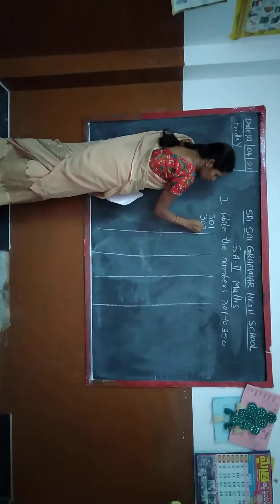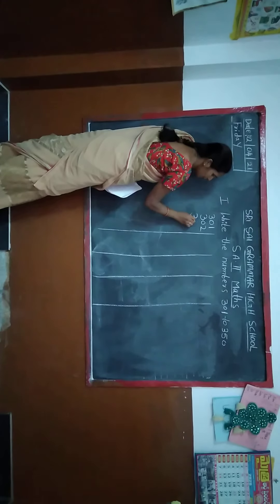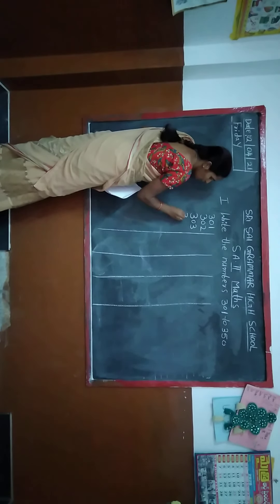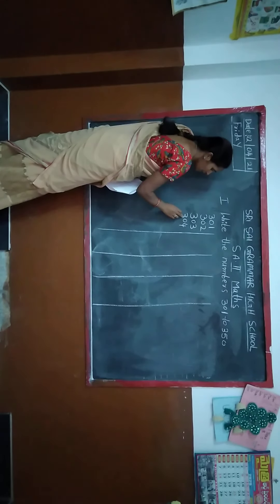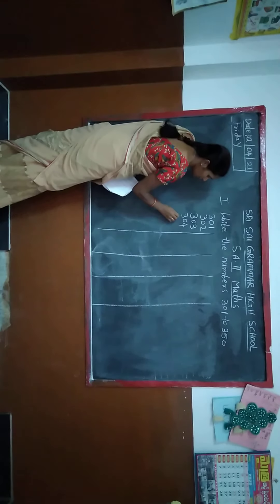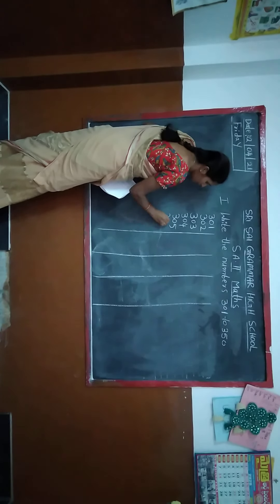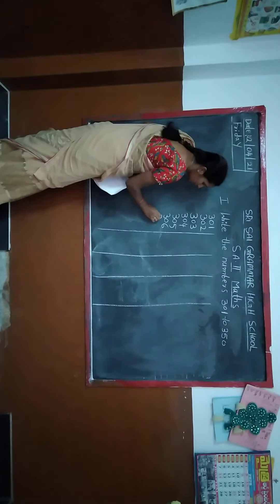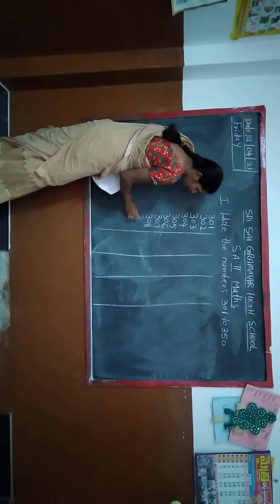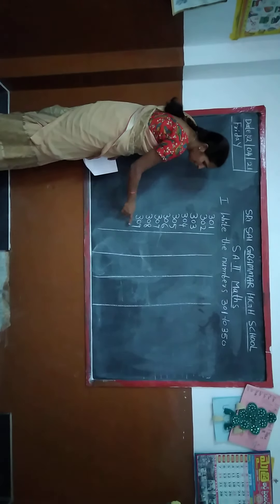Three hundred and two. 302. Three hundred and three. 303. Look here all of you. Play with me — 304. 304, after number? 305. 306. 307. 308. 309.